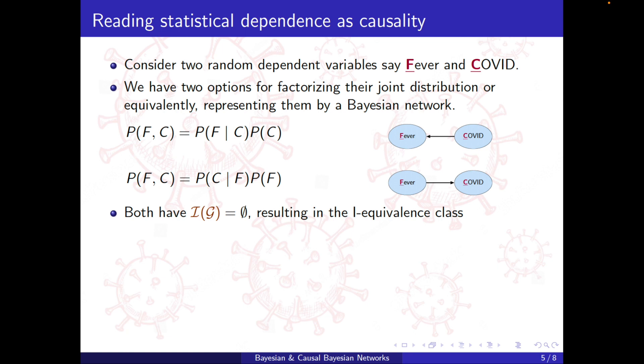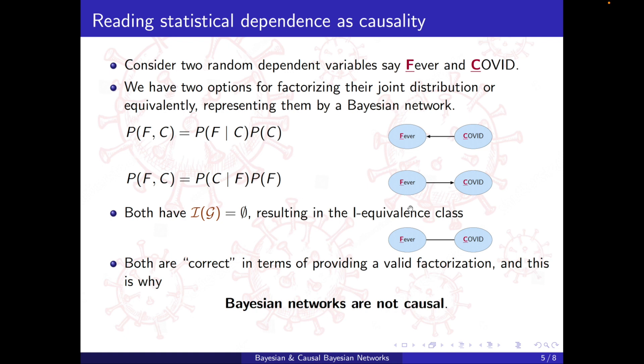Both of them have a global set of conditional independencies being empty. And that means that they are I-equivalent. So I can just denote the PDAG equivalence class as an undirected edge between them. So both of these are correct in terms of providing a valid factorization for my Bayesian network.